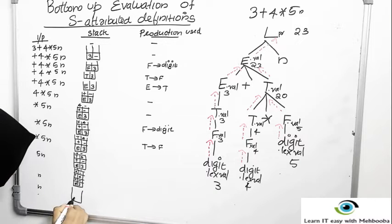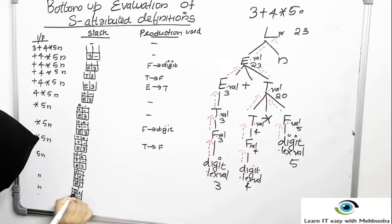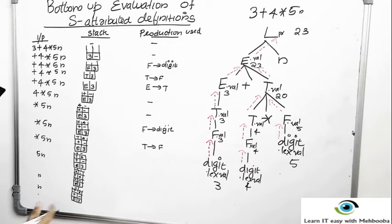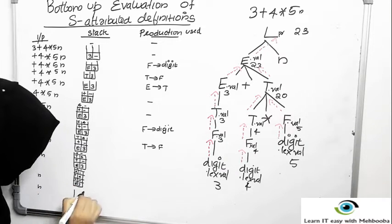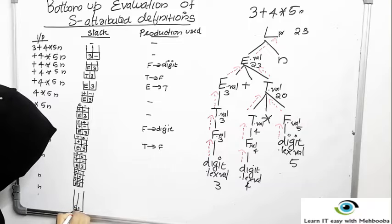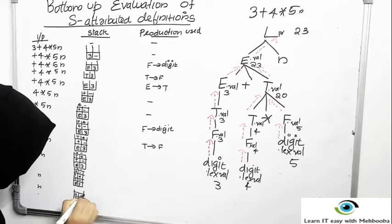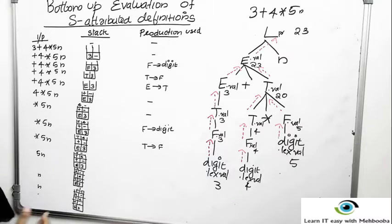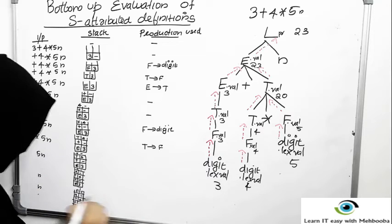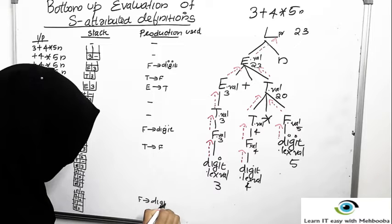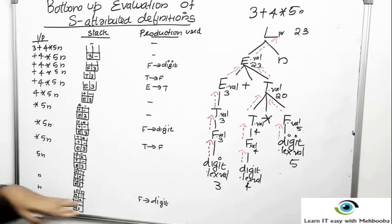We reduce 5 to F with value 5 using production F gives digit. Now the top of the stack has T, star, F — which matches the right-hand side of production T gives T star F.